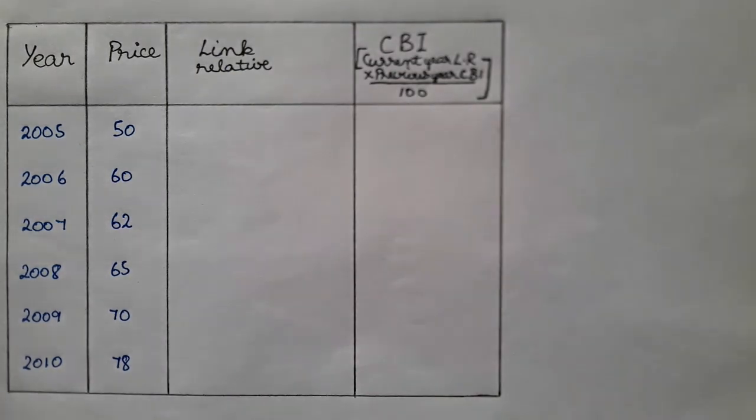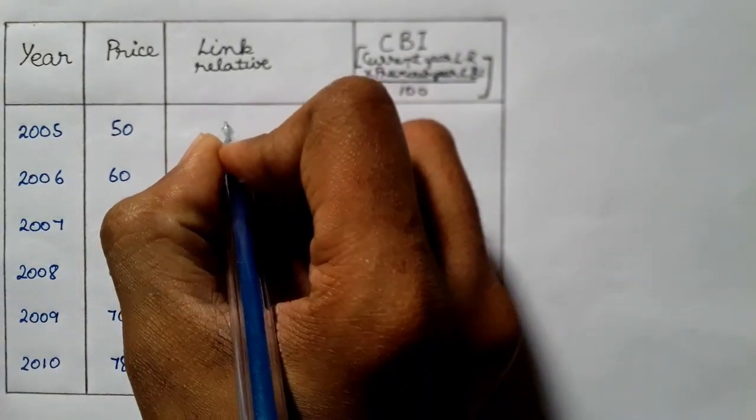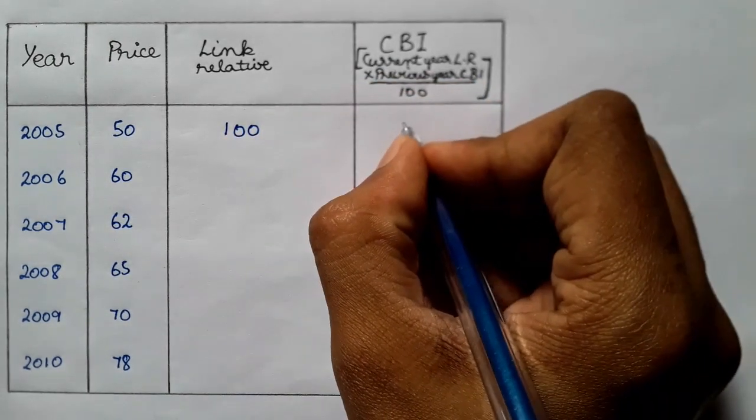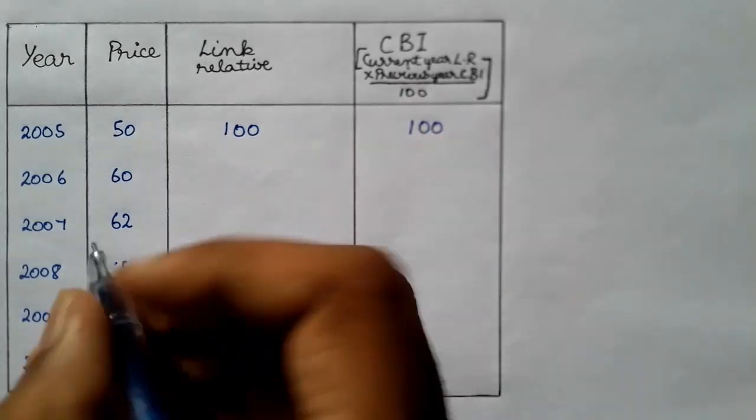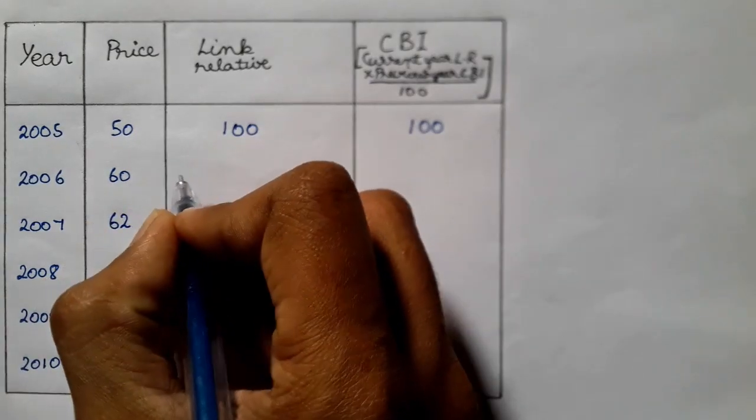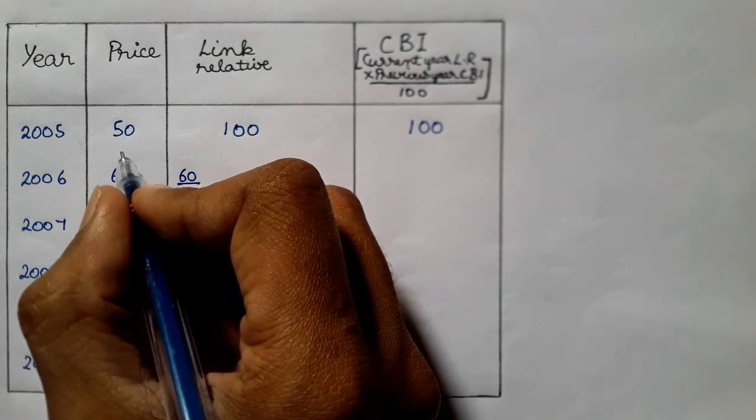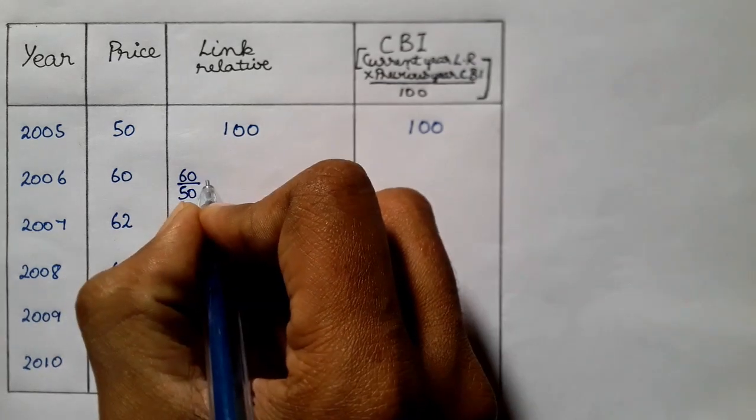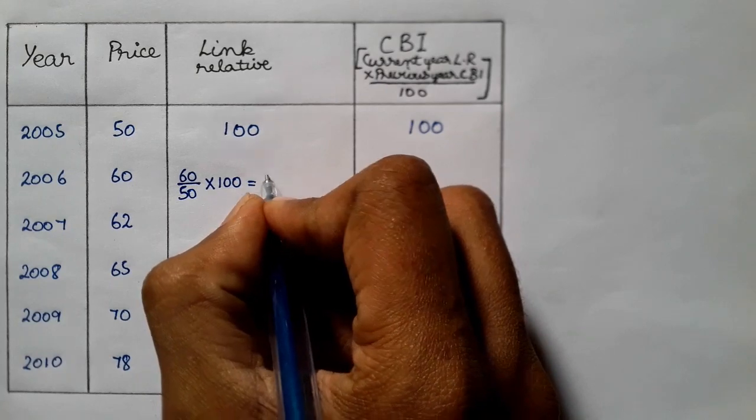Let's look at the basic step. Let's look at the chain-based index. Let's look at the second row. Let's look at the price. Here, there is 60. So, 60 divided by this value. Price is 50. So, 60 divided by 50 into 100.